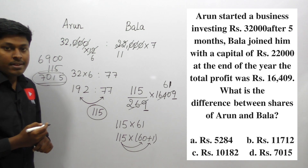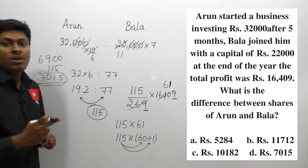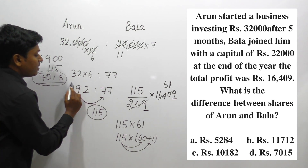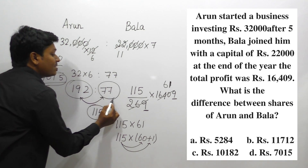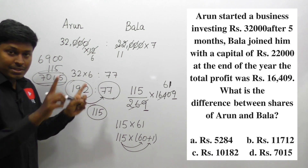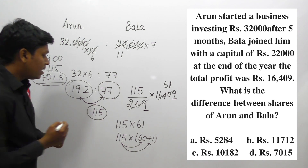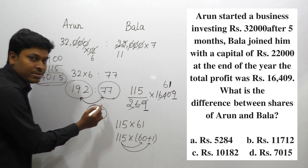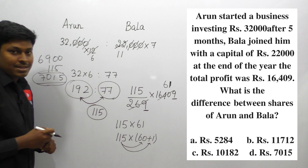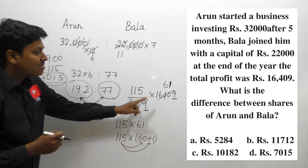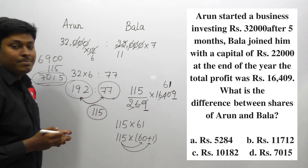The difference in their shares is 7,015, which is option D. The question is easy, but don't waste time calculating each person's share separately. Directly find the difference in the ratio — which is 115 divided by total 269 — then multiply by the profit 16,409 to get the answer 7,015.